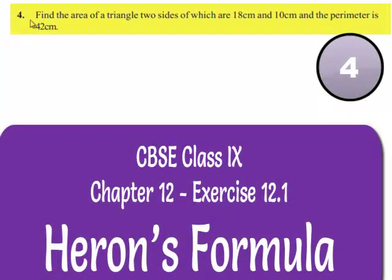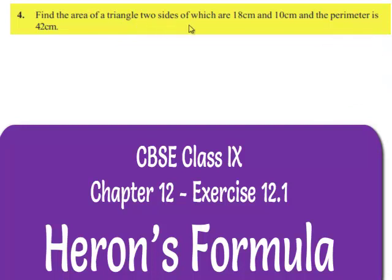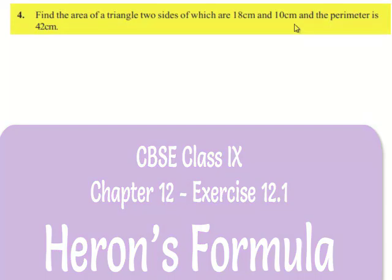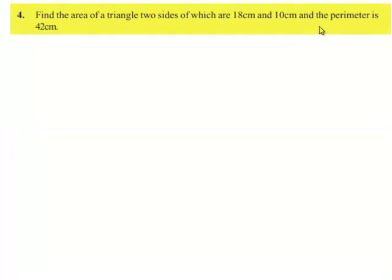Let us move on to the 4th question. Find the area of a triangle, two sides of which are 18 cm and 10 cm and the perimeter is 42 cm. Let us move on to the solution.